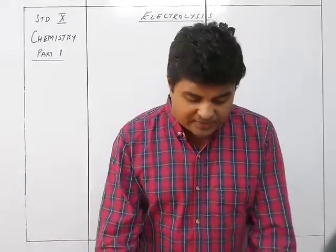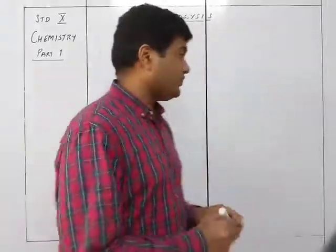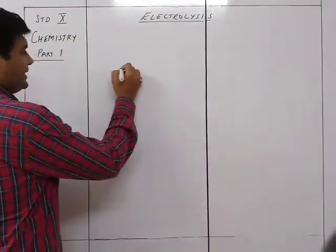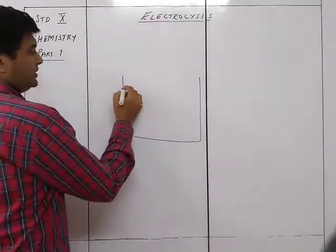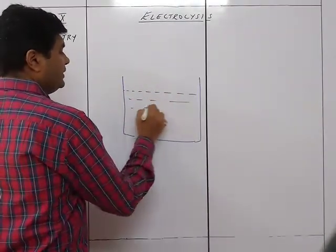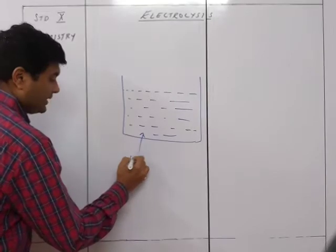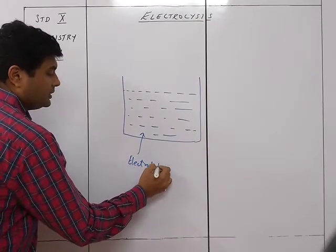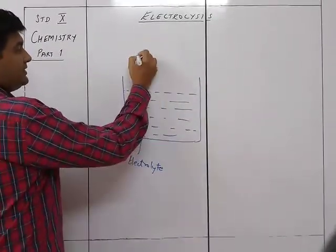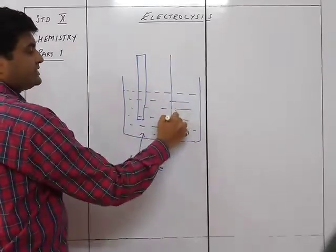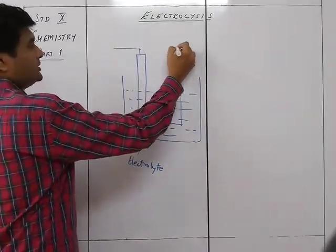When we talk about electrolysis, we have a general figure of electrolysis, or we can say the electrolytic cell. The electrolytic cell contains a vessel, and this vessel contains a liquid — the aqueous solution or liquid form — which is called the electrolyte. The electrolyte is the substance through which electricity is going to pass. There will be two electrodes: two rods placed inside the electrolyte.